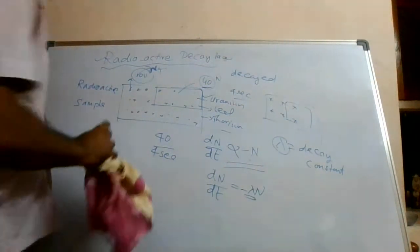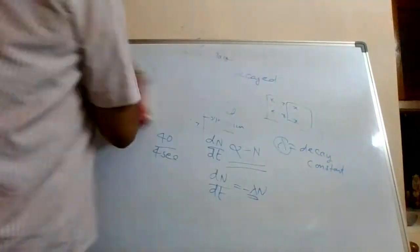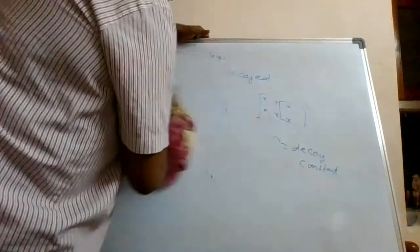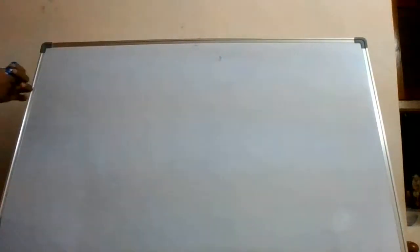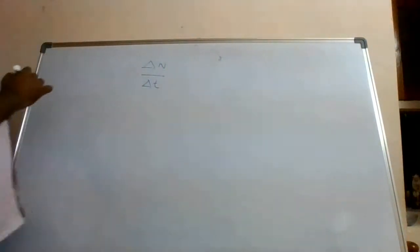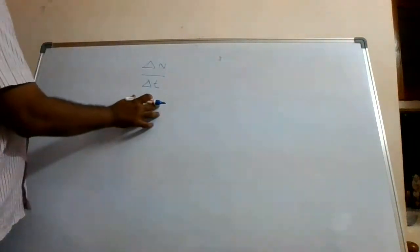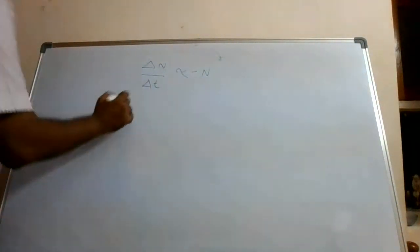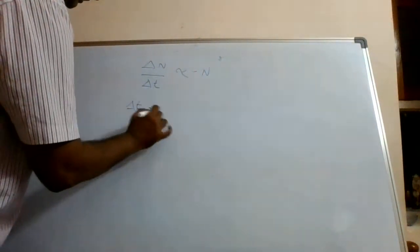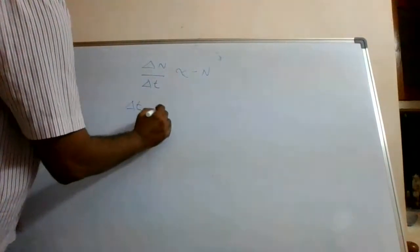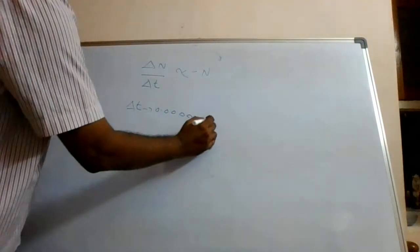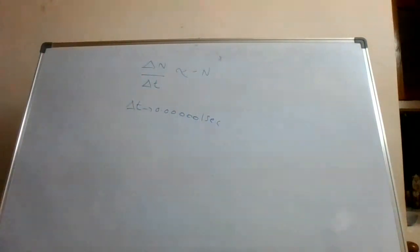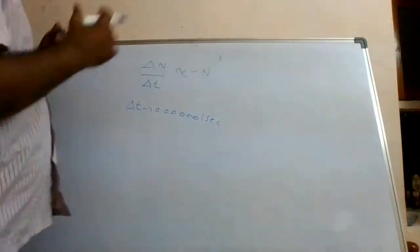Now let us derive an expression. Why do I write dN/dt? Basically it is δN/δt, which is proportional to N. This δt is a very very small time period — 0.000001 seconds — not like the 4 seconds example I gave.